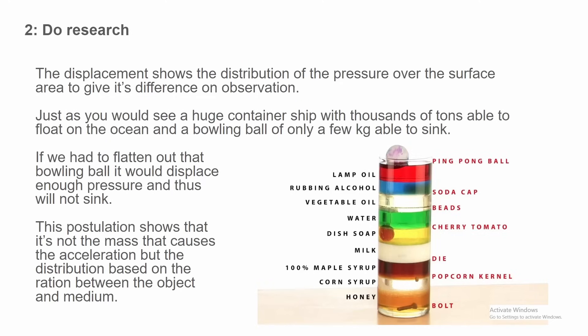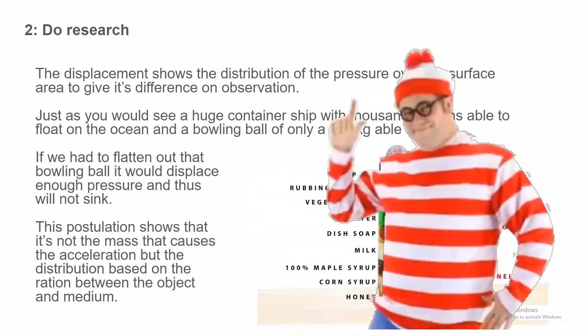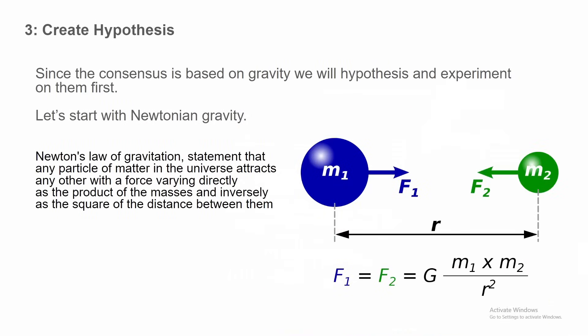The displacement shows the distribution of the pressure over the surface area to give its difference on observation - just as you would see a huge container ship with thousands of tons able to float on the ocean, and a bowling ball of only a few kilograms able to sink. Now if we had to flatten out that bowling ball, it would displace enough pressure over the surface that it will not sink. LOL - no. A bowling ball, whether it's a ball or a flat disc, will still sink.